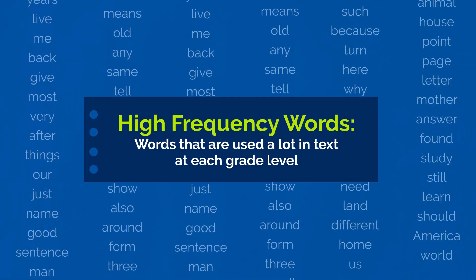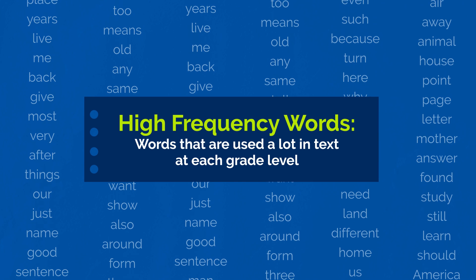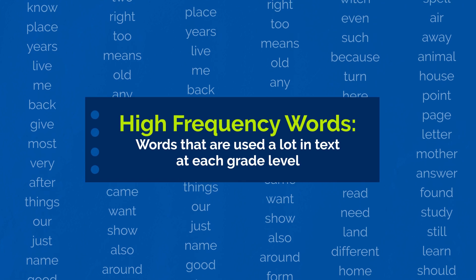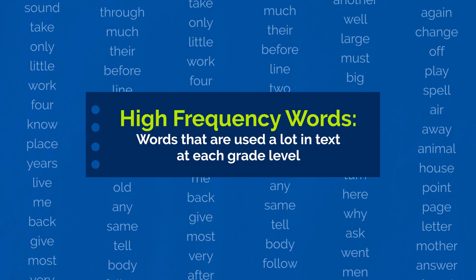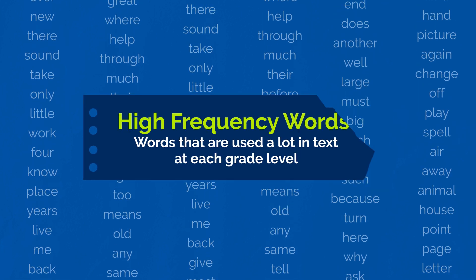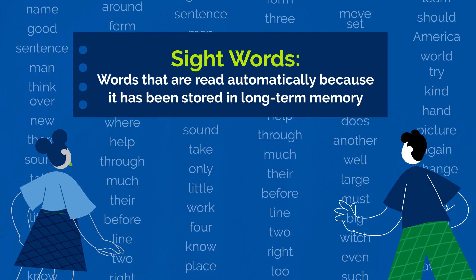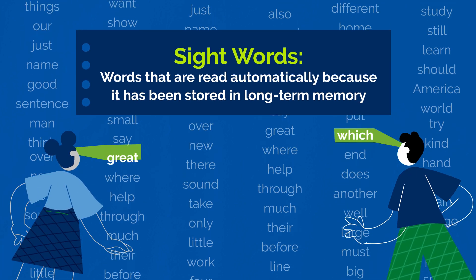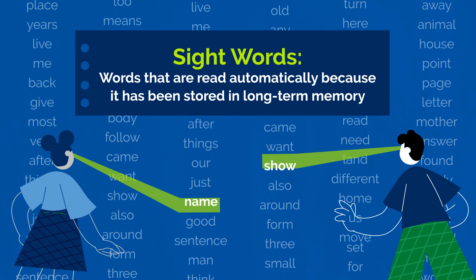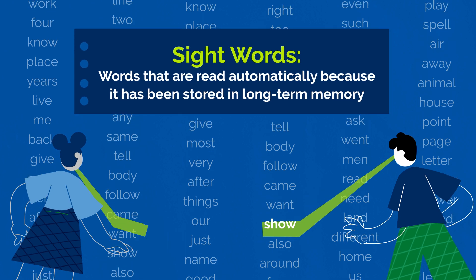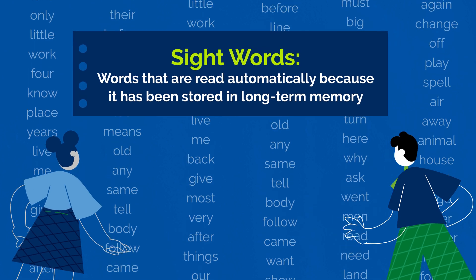High-frequency words are simply words that are used a lot in text at each grade level. Sight words are words that are read automatically when you see the word because they have been stored in long-term memory. The goal is that all words become sight words.